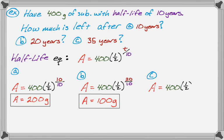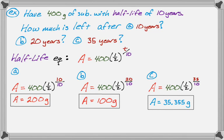For part C, we substitute t equals 35: A equals 400 times one-half to the 35 over 10. For this one I grabbed a calculator and approximated — A is approximately 35.355 grams. So that covers three examples of solving for A, the amount left after a certain time.